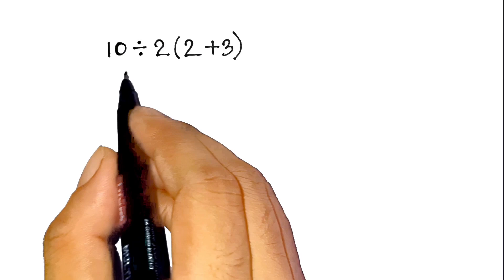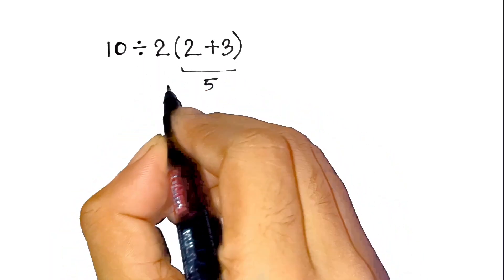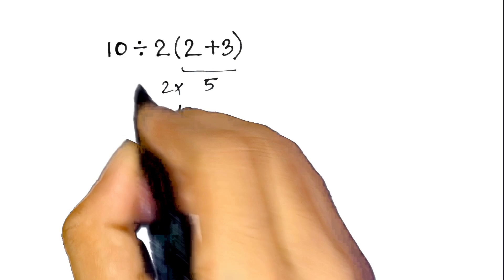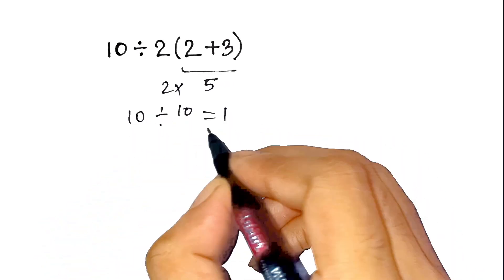So first, 2 plus 3 equals 5. Then 2 times 5 equals 10. And 10 divided by 10 equals 1. Simple. So the answer should be 1.